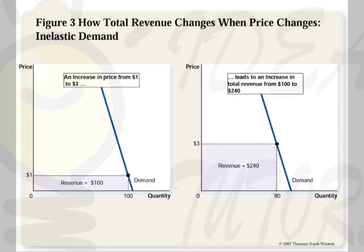As shown in the diagram, when price increases from $1 to $3 with an inelastic demand curve, total revenue increases from $100 to $240. The demand curve here has a steeper slope, meaning elasticity is lower — this is inelastic demand. So when demand is inelastic, total revenue moves in the same direction as price — there is a direct relationship between price and total revenue.